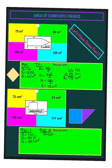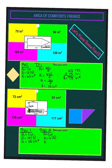For the second rectangle, the height will not be 9. Even though it says 9, we already used 3 of those 9 centimeters for the first rectangle. So from here to here is 6 centimeters. For rectangle two, area equals 6 times 8, and when you multiply 6 times 8, you get 48. So the area of the second rectangle is 48 centimeters squared.